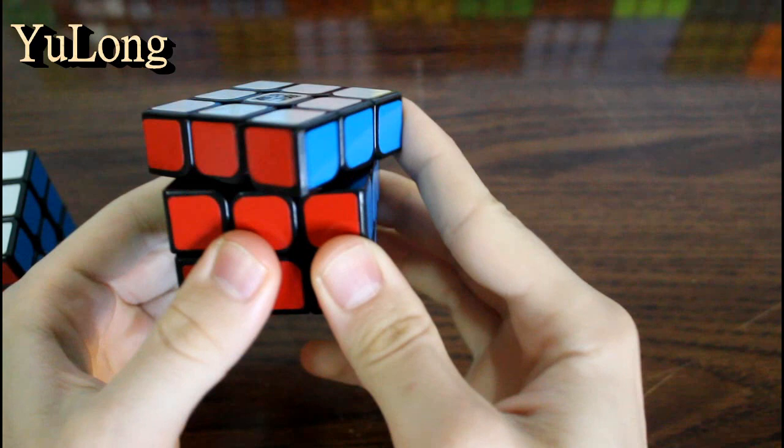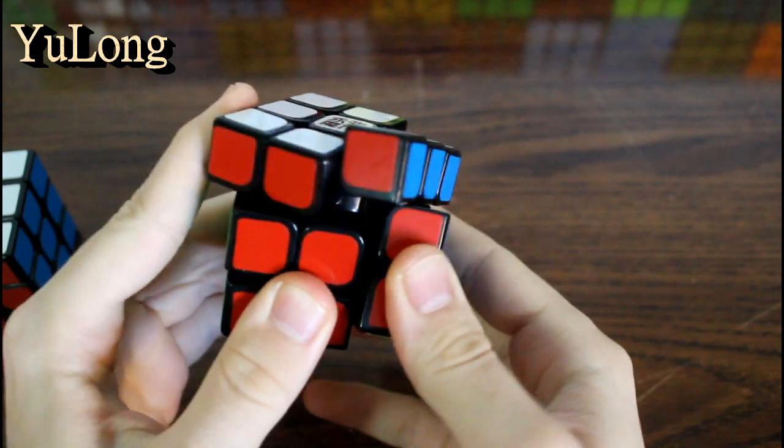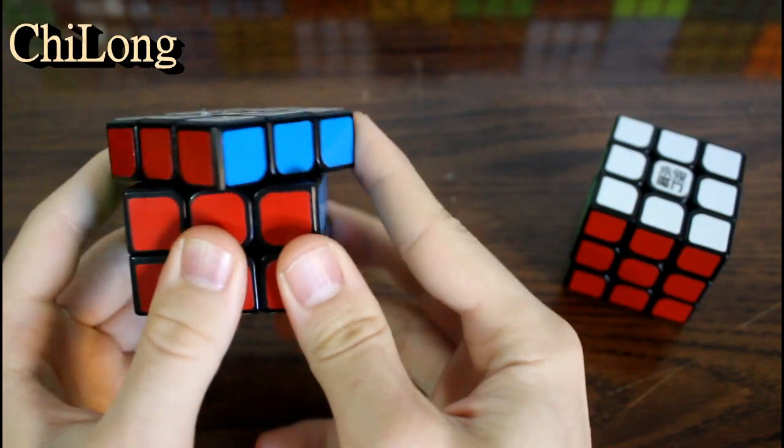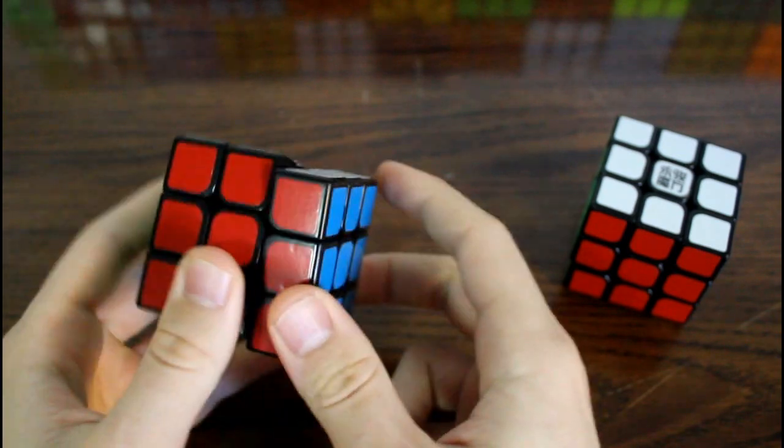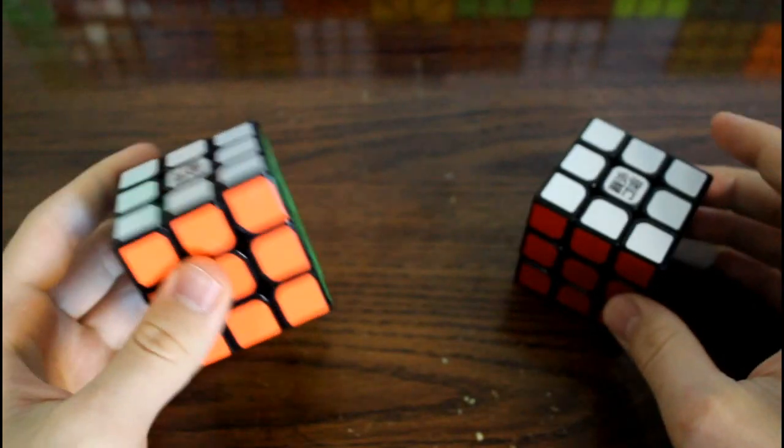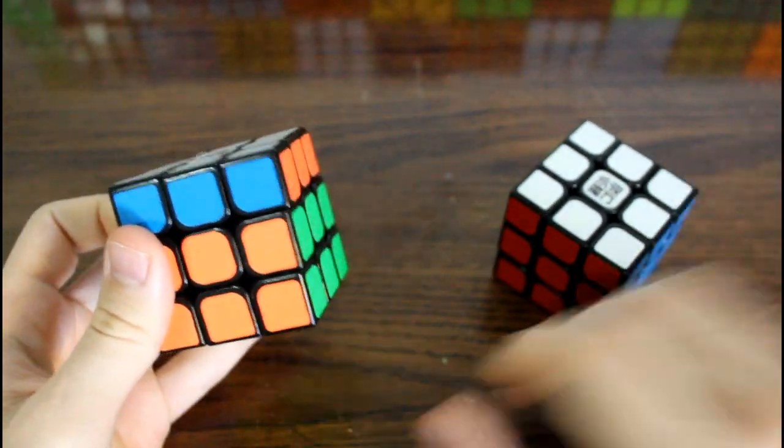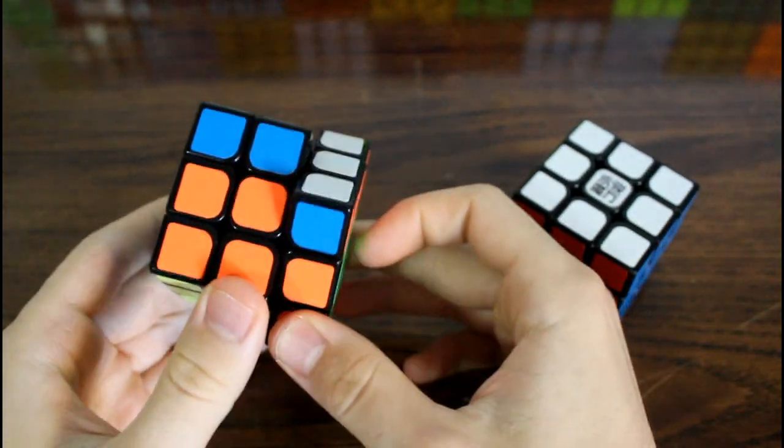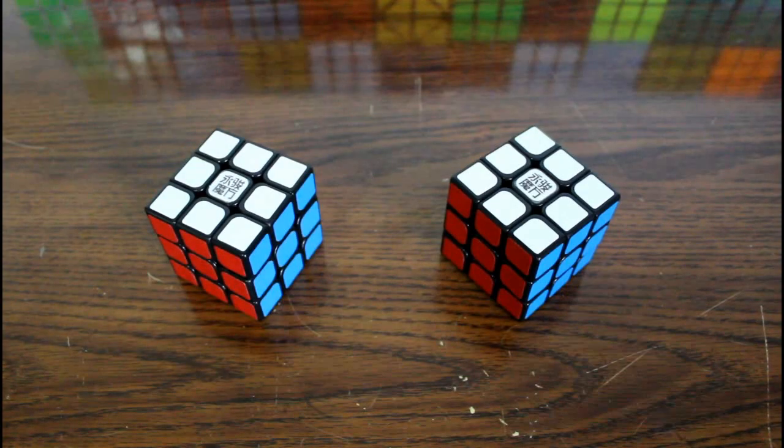The corner cutting is also very comparable with both cubes doing close to, but not over, 45 degrees. Both of these can lock up, but the lockups are minimal while doing a solve. Because of their speeds, they can mostly be controlled to where you don't have to corner cut that much in a solve.